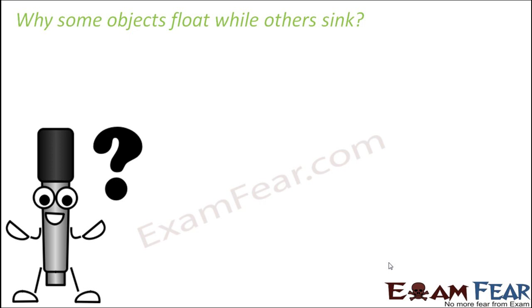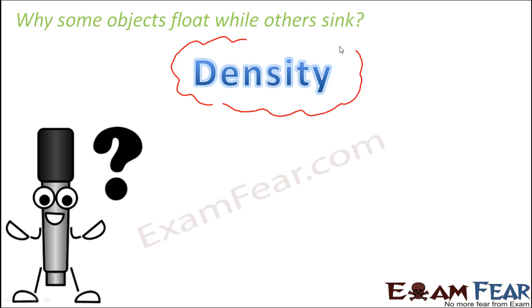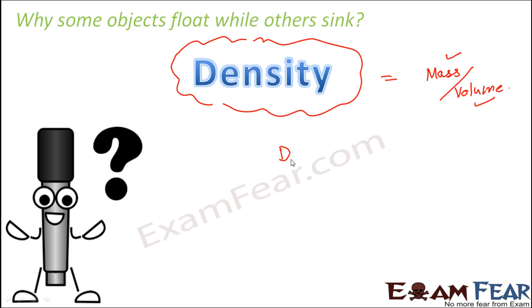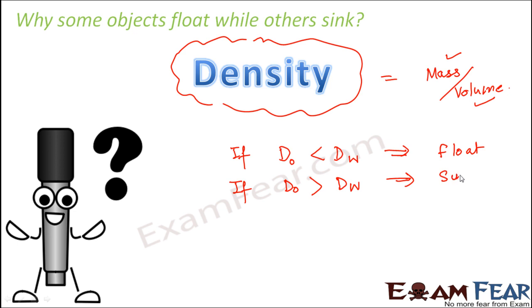A question that might bother you is: why do some objects float while others sink? The main reason is density. Density is mass per unit volume of any object. If the density of an object is less than the density of water, the object will float. If the density of an object is more than the density of water, the object will sink. Objects with lower density remain on the surface.